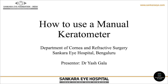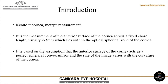So what does keratometry mean? Kerato means cornea, metry means measurement. It is a measurement of the anterior surface of the cornea across a fixed chord length, usually 2 to 3 mm, which lies within the optical spherical zone of the cornea. It is based on the assumption that the anterior surface of the cornea acts as a perfect spherical convex mirror, and the size of the image varies with the curvature of the cornea.